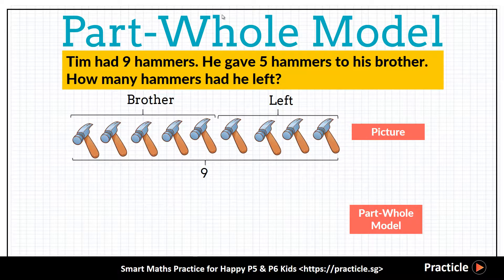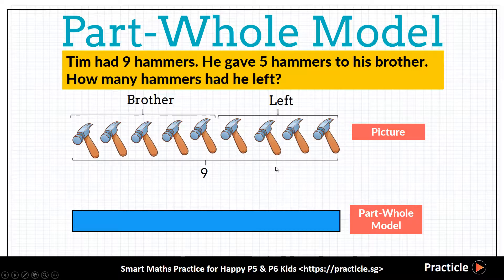The whole refers to everything that a person has. In this case, it would be all the hammers that Tim had, which happens to be 9. And to draw the whole, we simply draw a rectangle bar of any length to represent it. So that's pretty easy, right?